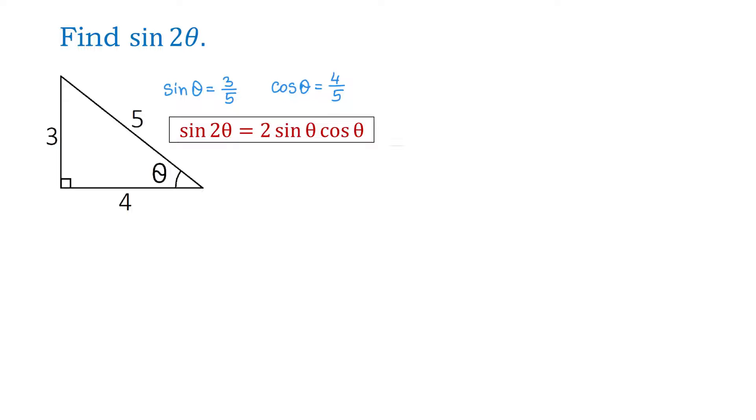So to get sine of 2 theta, we will replace sine of theta with 3 over 5 and cosine of theta with 4 over 5. Then, sine of 2 theta will be equal to 2 times 3 over 5 times 4 over 5.